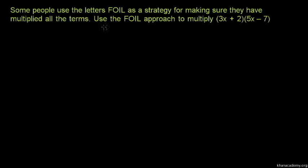Hello everyone, I am going to multiply polynomials. The FOIL strategy is to multiply the terms. We will multiply 3x plus 2 and 5x minus 7.